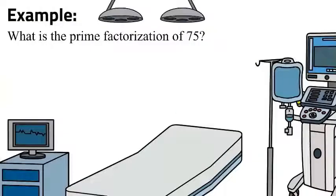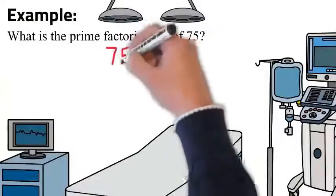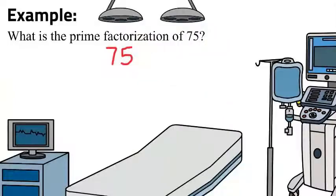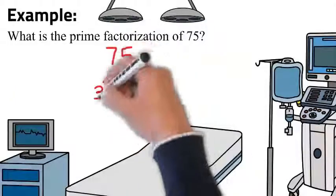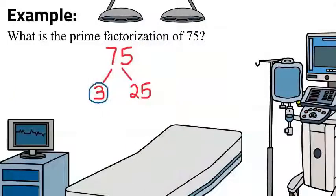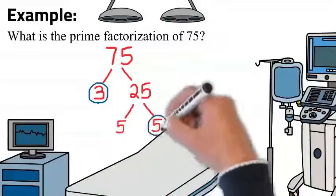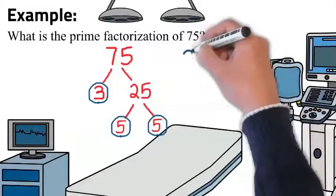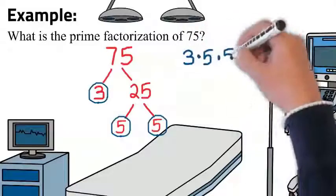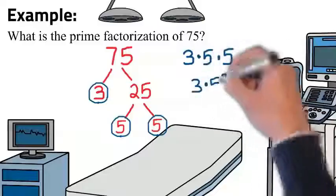Let's try one more. The prime factorization of 75. 75 can be broken into 3 times 25, where 3 is prime. And 25 can be broken into 5 times 5, where 5 is prime. So we can rewrite 75 as 3 times 5 times 5, or 3 times 5 squared.